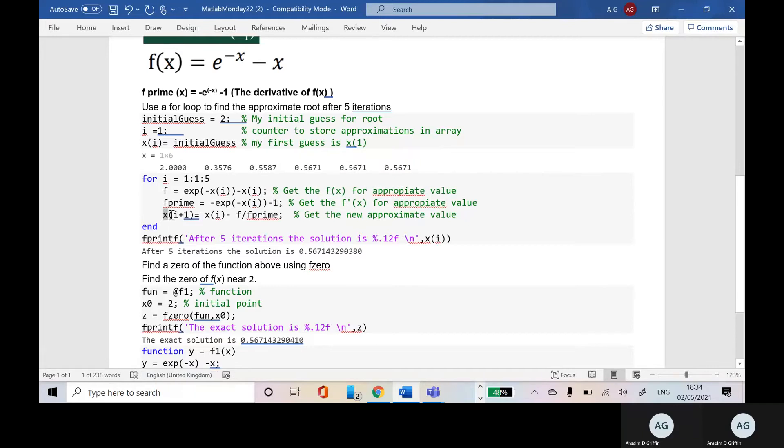And the second value in the array, xi plus 1, x2 is the initial one, that's x1 minus the f over f prime. So you go around five times and the fifth time you go around, you will get the sixth value.